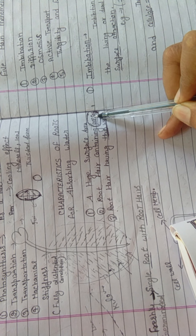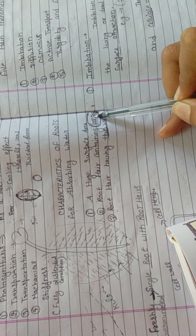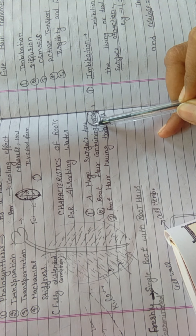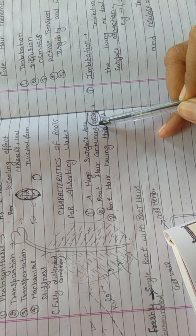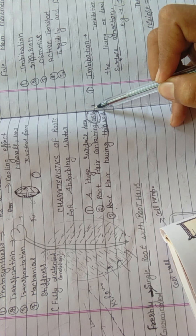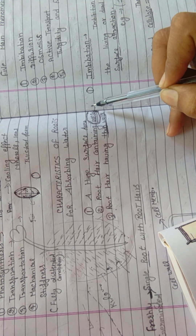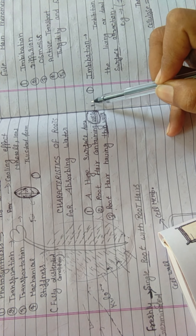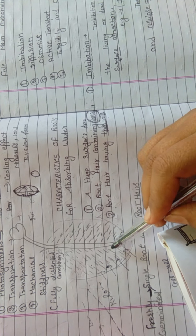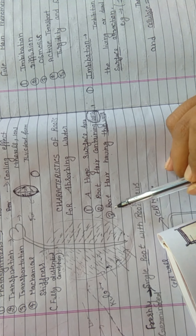Next characteristic: root hairs contain cell sap of higher concentration than that of the surrounding water. This characteristic is important for the requirement to draw in water from outside — for example, by occurrence of osmosis. If the cell sap inside the root hair is highly concentrated, meaning water is less there, the root hairs will absorb the outside water.